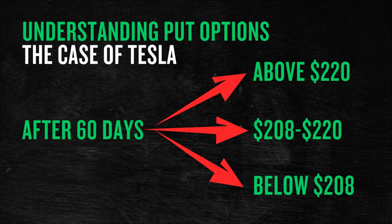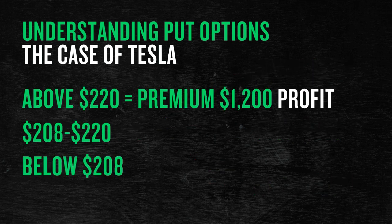After we sell the put option, three things can happen: Tesla can rise above the current price or at least stay above our strike price of $220; Tesla can trade between $208 and $220; or Tesla can fall below $208 per share. All these affect us differently. Number one: if Tesla stays above $220 at the end of the trading session on the put option expiration date, we profit 100% of $1,200.